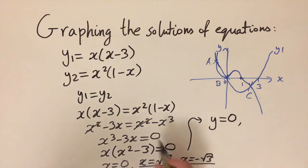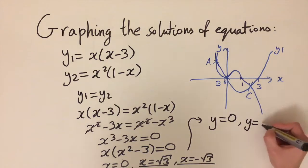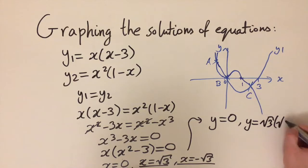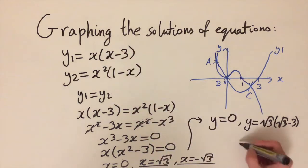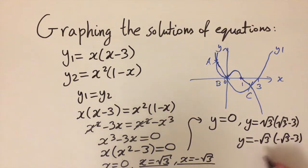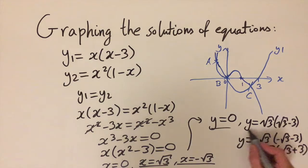Substituting x equals root 3 gives y equals root 3 times (root 3 minus 3). Substituting x equals minus root 3 gives y equals minus root 3 times (minus root 3 minus 3), and distributing the minus signs gives root 3 times (root 3 plus 3).